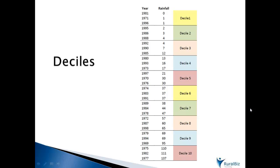Deciles give an even better idea of how dry or wet a period has been compared to our historical records. Again, we've got those same rainfall figures ranked from the driest year through to the wettest year. There are 30 years of figures here and we divide them up into bands of 10%, or 3 years in each band. We then label those bands from the lowest through to the highest as decile 1 through to decile 10. This means that our lowest 10% of rainfall years are in decile range 1, the next 10% are in decile range 2, and so on. We can also see that the top of decile range 5 is the median.